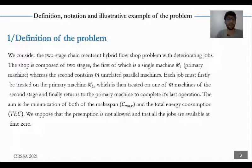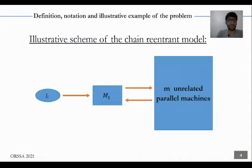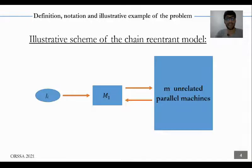We suppose that preemption is not allowed and that all jobs are available at time zero. In this slide, we present the illustrative scan of the chain-reentrant model. Each job J_i must be treated on M1, the primary machine. After that, it must be treated on one of the M unrelated parallel machines, and it returns to M1 for its last operation.